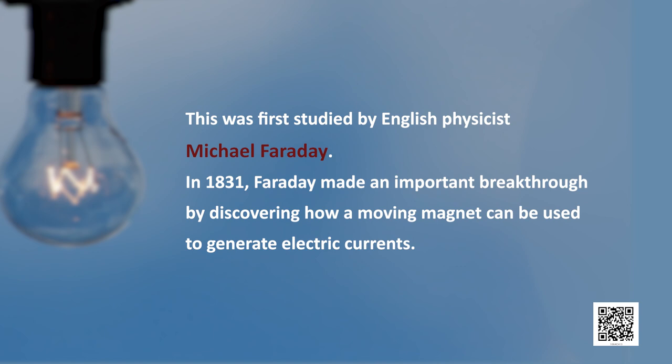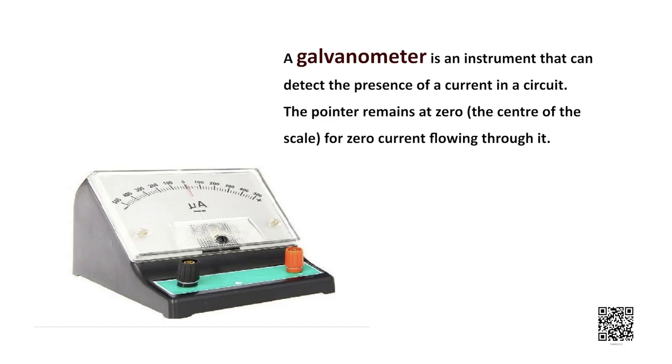This was first studied by the English physicist Michael Faraday. In 1831 Faraday made an important breakthrough by discovering how a moving magnet can be used to generate electric currents. Remember a galvanometer is an instrument that can detect the presence of current in a circuit. The pointer remains at zero, the center of the scale, for zero current flowing through it.